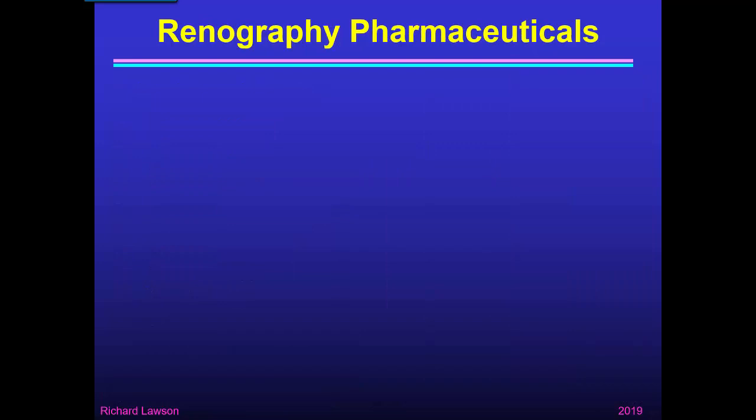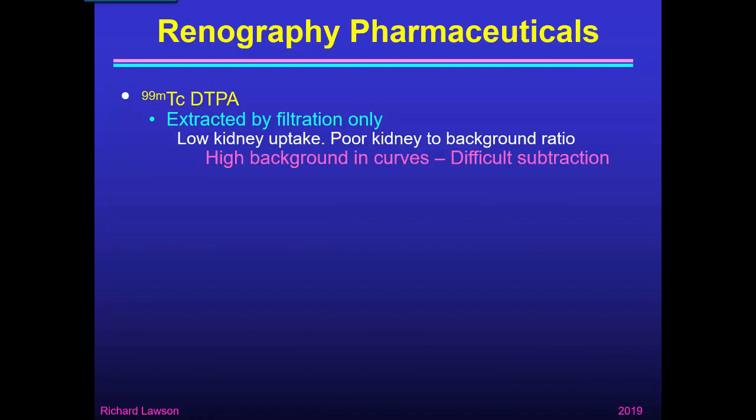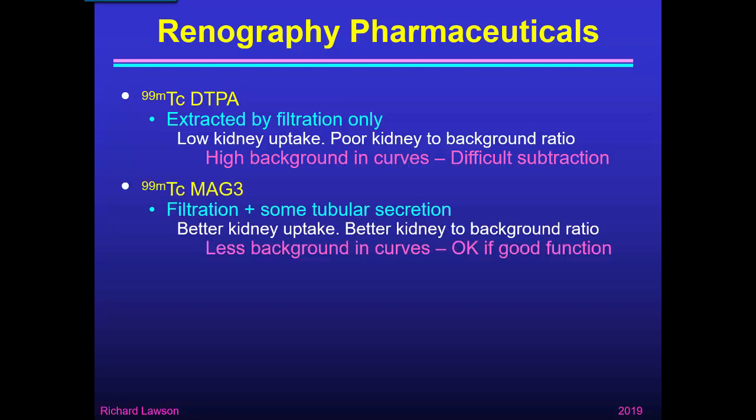There are three suitable radiopharmaceuticals to mention. Technetium-99m DTPA is extracted by filtration only, giving relatively low kidney uptake, a poor kidney-to-background ratio, and a large background in the renogram curves, making subtraction difficult. Technetium-99m MAG3, on the other hand, has tubular secretion as well as filtration, giving better kidney uptake, less activity in the blood, and a better kidney-to-background ratio. This means less background in the renogram curves, making background subtraction manageable as long as function is good.